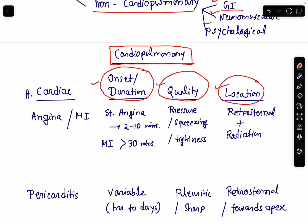Cardiac causes of chest pain can be due to angina, myocardial infarction, or pericarditis.